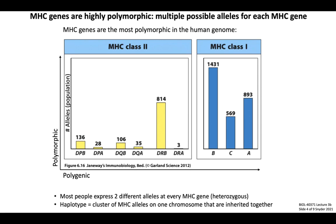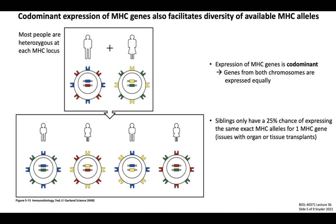In addition to high polymorphism, consider that most humans express two different alleles at every MHC gene, meaning they are heterozygous for each MHC gene. The cluster of MHC alleles located close together on one chromosome that tend to be inherited together are referred to as the haplotype of an individual. The last genetic property enabling MHC diversity is that all of these genes are expressed codominantly, meaning that gene products from each of two chromosomes are expressed equally — MHC genes do not exhibit dominant-recessive phenotypes.